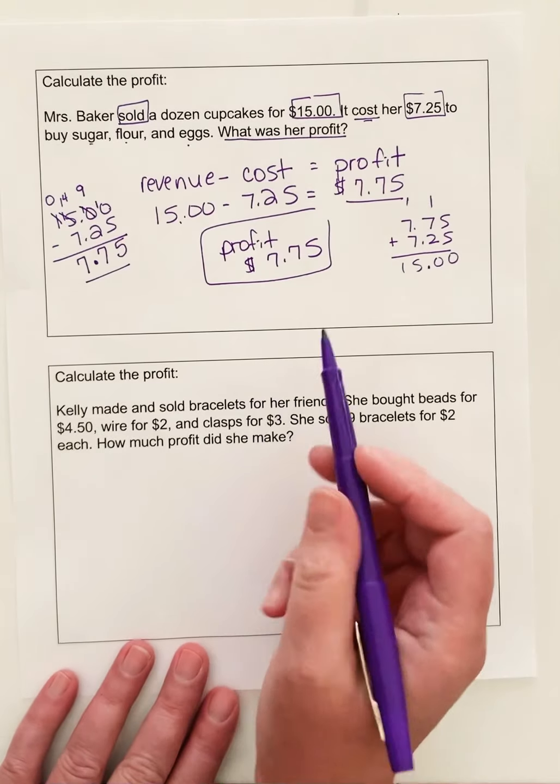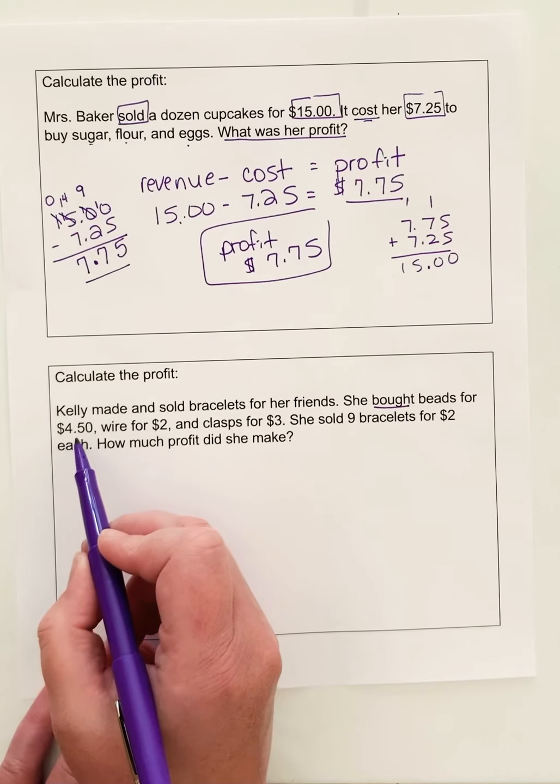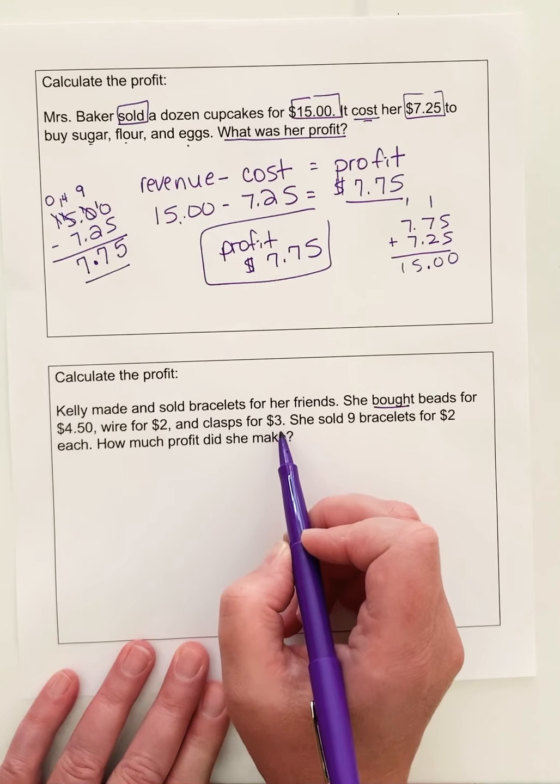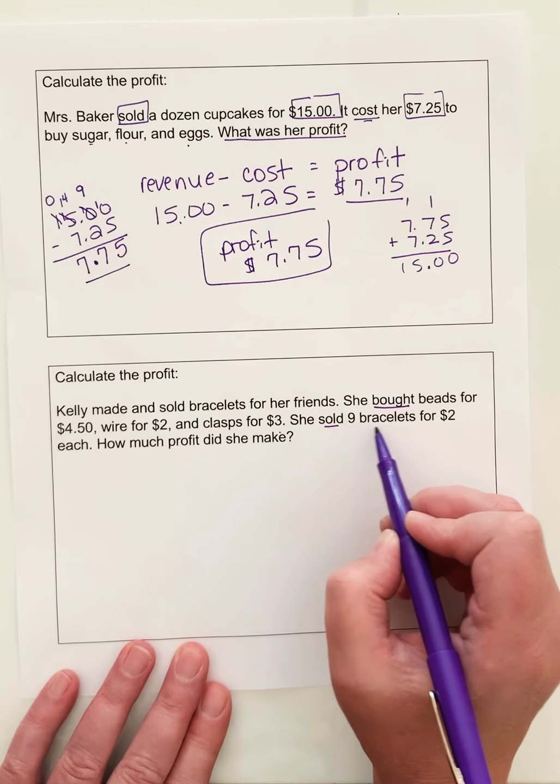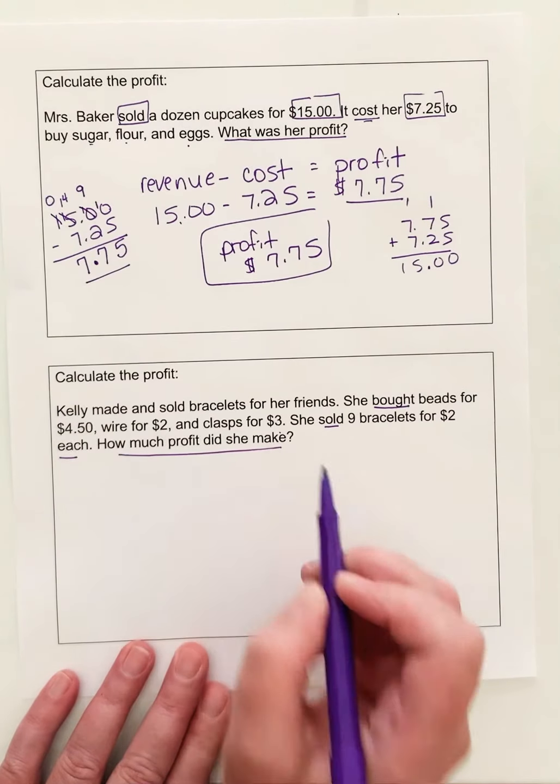So let's do the next one. Kelly made and sold bracelets for her friends. She bought beads for $4.50, wire for $2, and clasps for $3. She sold 9 bracelets for $2 each. How much profit did she make?